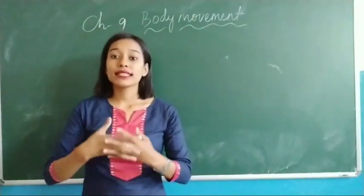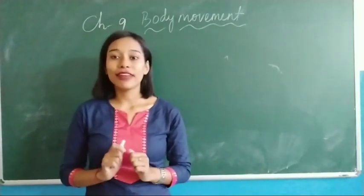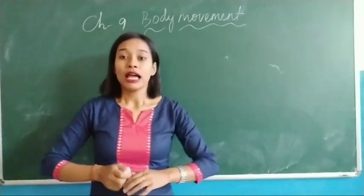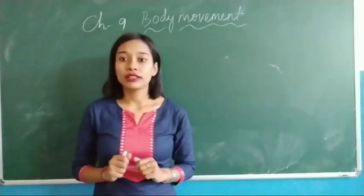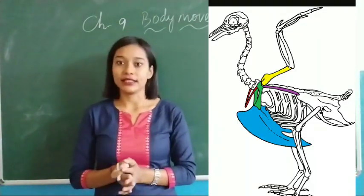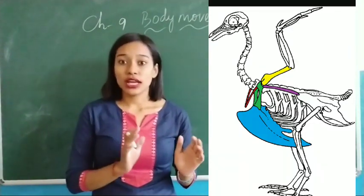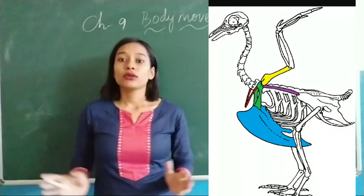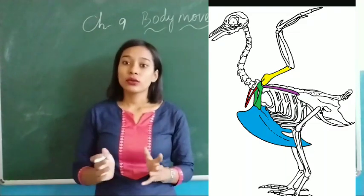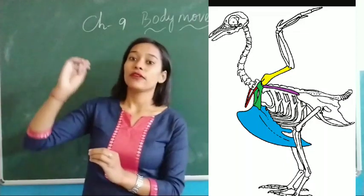Now we will discuss movement in birds. Birds move from one place to another by flying. They have wings covered with feathers. They also have a very light skeleton which helps them to fly high. Some birds like the ostrich and penguin cannot fly because their body weight is too much. So to reduce weight, most flying birds have a very light skeleton which enables them to fly high.